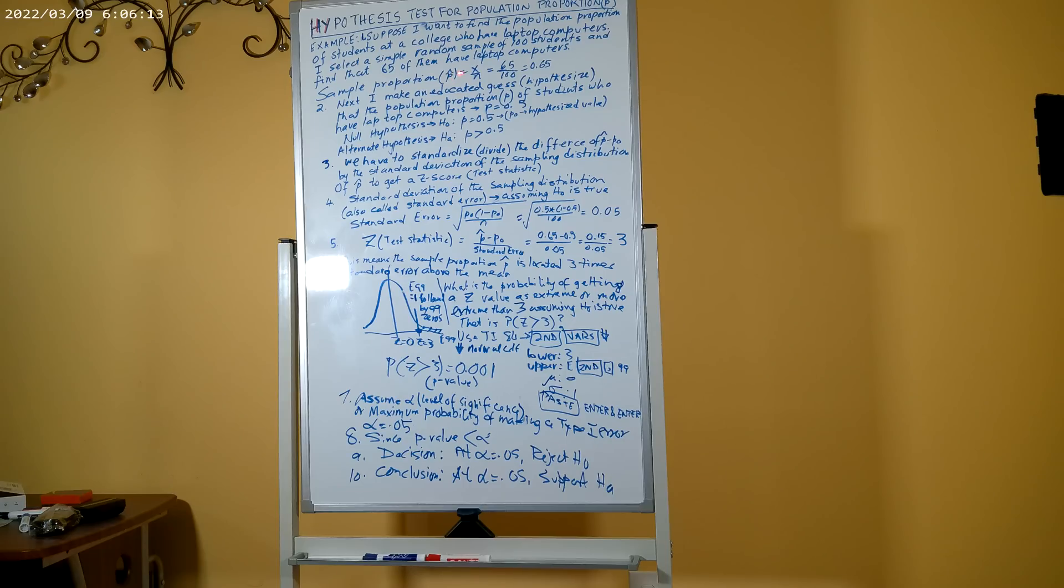So my sample proportion of students who have laptop computers, which is given by p hat, is 65 out of 100 or 0.65. Next, I make an educated guess, hypothesize, that the population proportion p of students who have laptop computers is equal to 0.5. So my null hypothesis, or my status quo, is H₀: p = 0.5. This is my hypothesized value, p = 0.5.